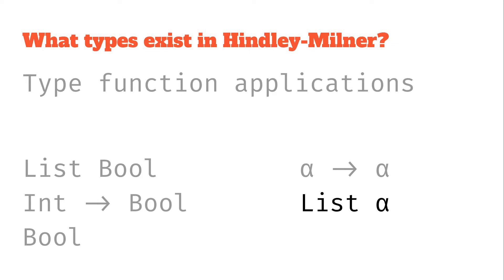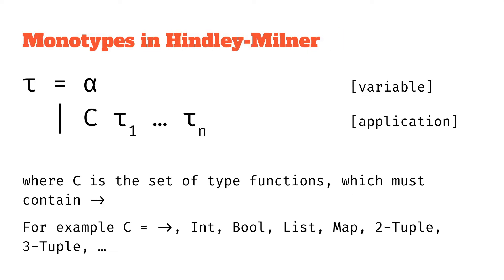Those are the two main types in Hindley-Milner that we're going to start looking at — we'll call these monotypes. We have type variables and type function applications. The grammar is something like this: tau, our monotype, is either alpha, our type variable, or a type function application — capital C is our type function and the little taus are the arguments we're passing to that function.